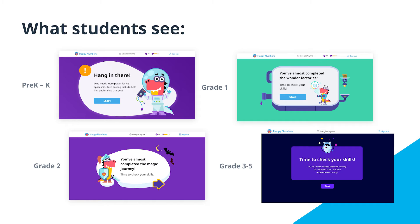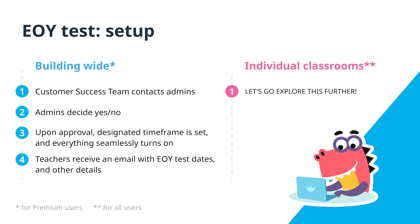Let's start with the basics: setting up the end-of-year assessment. On Happy Numbers, the setup can occur in two ways. For premium users, the Happy Numbers customer success team initiates communication with school or district administrators to inquire about enabling district- or school-wide assessments. In such instances, administrators determine the time frame and the system activates everything automatically, with teachers receiving informative emails about the assessment dates. Alternatively, teachers who are free or premium users have the option to activate their individual testing dates. I'll demonstrate how to do this using my demo account.